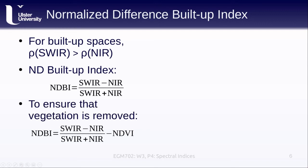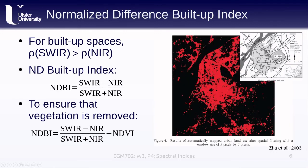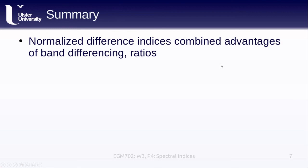To ensure that vegetation is removed, we also subtract the NDVI values for those pixels — or at least classify pixels as vegetation or non-vegetation. This was proposed in a 2003 paper studying a city in China. You can see the map of the city with built-up or impermeable surfaces labeled in gray, alongside the derived built-up map based on the NDBI, which maps fairly well with the reference data.